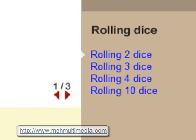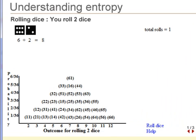The series of 2, 3, 4, and 10 dice are designed to show you that as the number of dice increases, so the number of accessible states, W, increases.